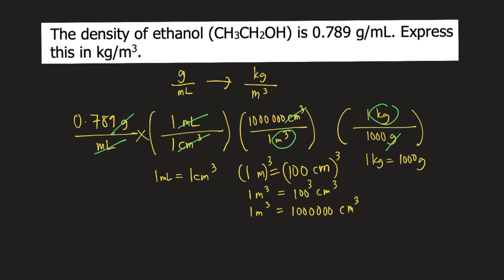So you just multiply everything. And your answer would be 789 kg per meter cubed.